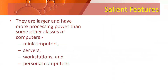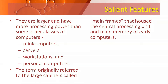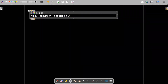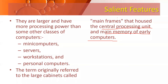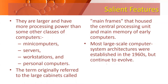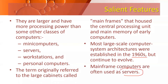Some salient features of a mainframe computer: they are larger and have more processing power than mini computers, servers, workstations, and personal computers. The term originally referred to the large cabinets called mainframes that housed the central processing unit and main memory of early computers. Early computers like the Mark 1 occupied a whole room. Mainframe computers also occupy huge rooms and house more than one processor along with various racks and cabinets.